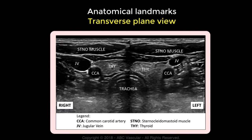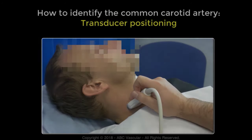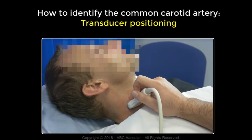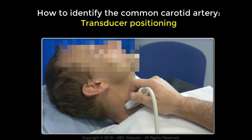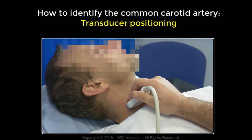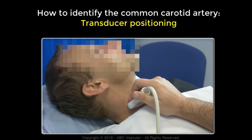In the next section of this video lecture, we will demonstrate how to position the transducer on the neck of the patient and the ultrasound appearance of the anatomical landmarks used to identify the carotid arteries. To identify the common carotid artery, position the transducer using a transverse view in the medial aspect of the neck, between the sternocleidomastoid muscle and the trachea. When positioning the transducer at this level, the proximal region of the common carotid artery will be visualised.